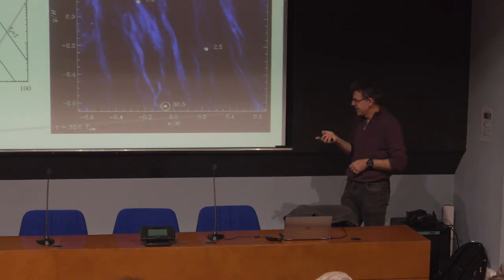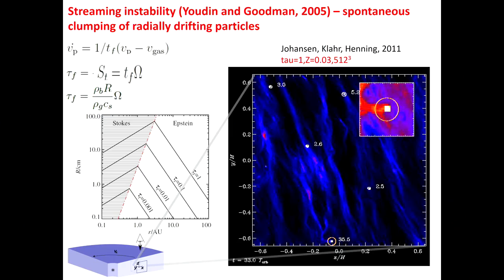The simulation parameters are important. Z is the initial volume ratio between particles and gas — 3% in this simulation, already quite high since the solar metallicity gives a solid-to-gas ratio of about 1%. The other key parameter is tau — the Stokes number. The equation of motion under gas drag shows that the deceleration is proportional to the velocity difference between particle and gas, with a coefficient that has units of inverse time — the friction time. The Stokes number is this friction time normalized by the orbital timescale (omega), giving a dimensionless number.